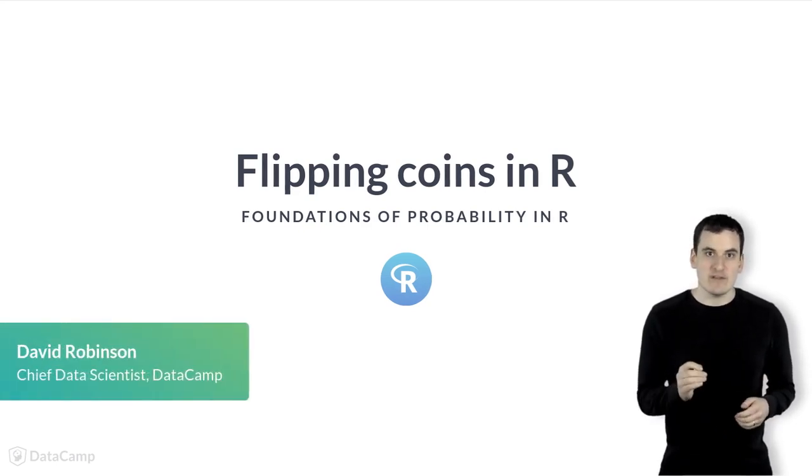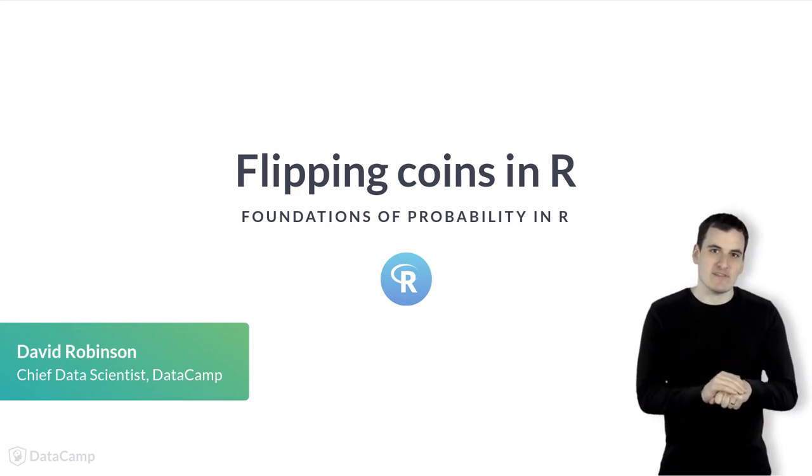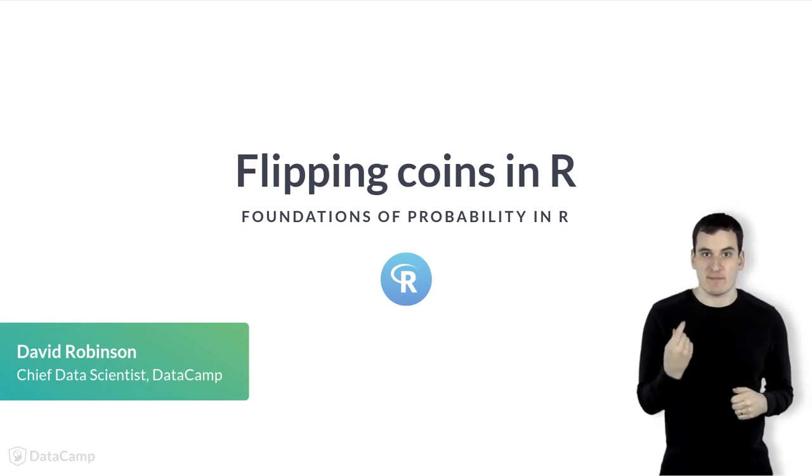I'm Dave Robinson, and I'll be your instructor for this course, where we'll be talking about one of the simplest models for generating random data, a coin flip. By exploring coin flipping with the R programming language, you will learn the basic laws and methods of probability.